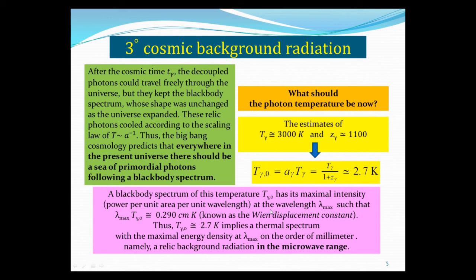Now if you know this temperature and that it obeys the blackbody spectrum, you know its maximum intensity occurs at the wavelength given by Wien's displacement constant. The maximum intensity wavelength times the temperature should be 2.9 centimeters times Kelvin. So 2.7 K implies a thermal spectrum with maximum intensity around a wavelength of about 1 millimeter. In other words, the relic background radiation is in the microwave range. That's what we call the cosmic microwave background.